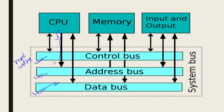The data bus is two-way — bidirectional — carrying data between CPU, memory, and I/O devices.